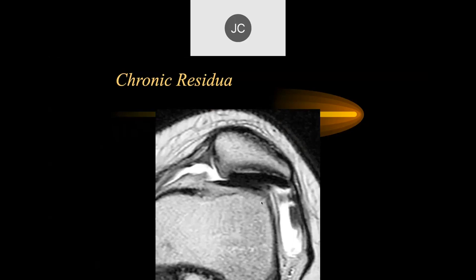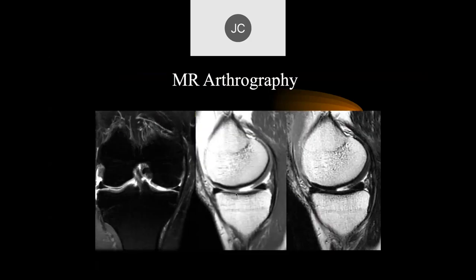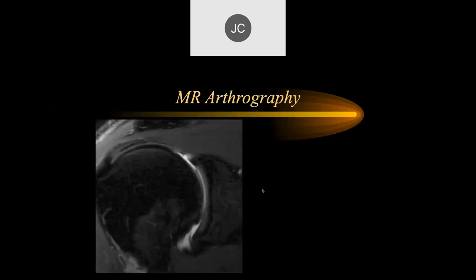Often we'll see these years after they occur. Quite commonly in the area of the defect, within months, you can see subchondral osteophytes develop as the body attempts to heal. Some people like to do MR arthrography, but I really don't think it's necessary. We see these defects very well now with high-quality T2 and PD fat sat images, so I don't think contrast is really very helpful.